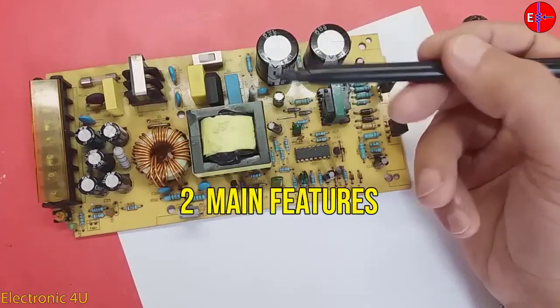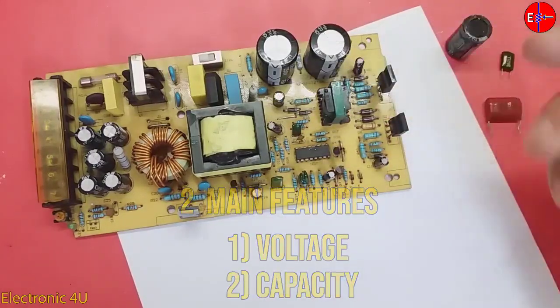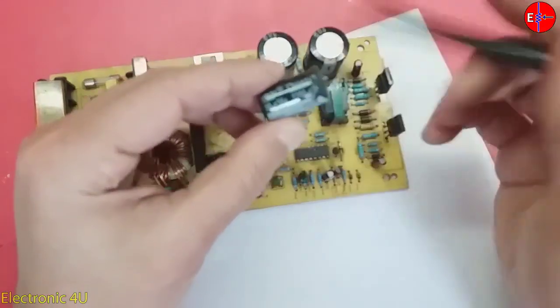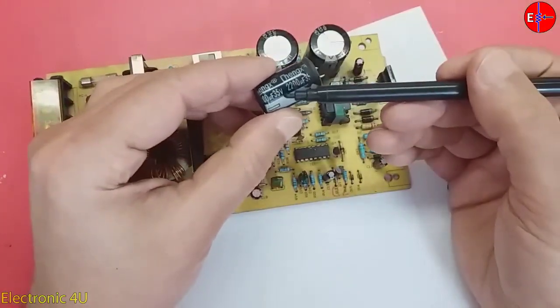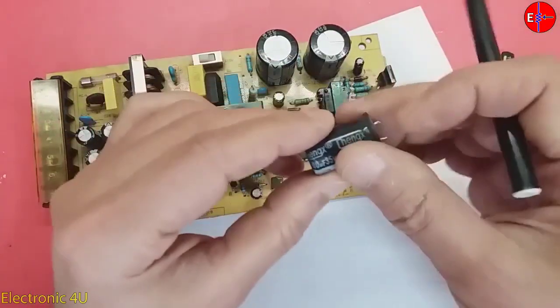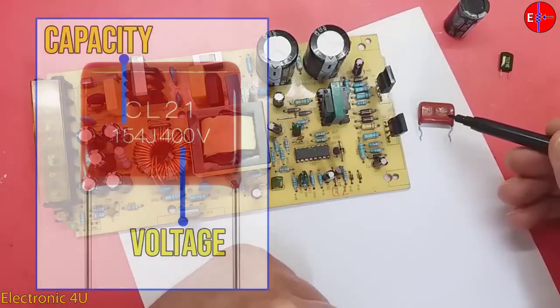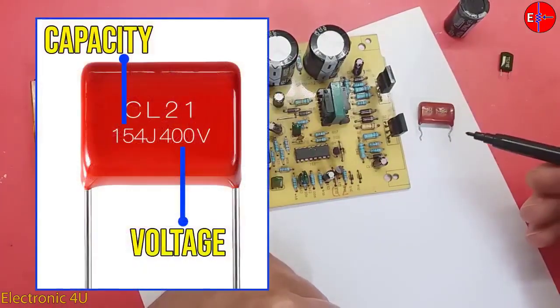Capacitors have two main features. One is voltage and the other is capacity. This capacitor is 35 volts and has a capacity of 220 microfarads. This is also a capacitor with capacity and voltage written on it.